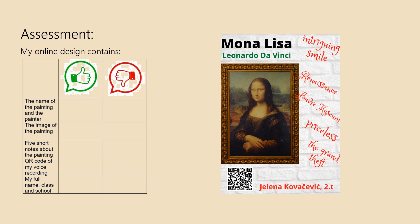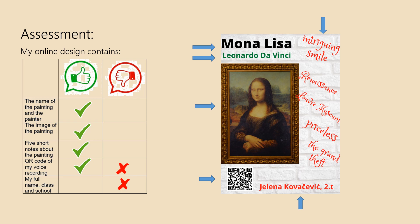Now it's time to assess your work before posting it online. Let's use my poster as an example and see whether it meets all the criteria mentioned earlier. My poster contains the name of the painting and the name of the painter, the image of the painting, five notes about the painting, and the QR code of my voice recording. You can see my name and the name of the imaginary class, but there is no name of the school. Also, if you scan the QR code, you will notice that the text does not contain my opinion, so my work should be revised.